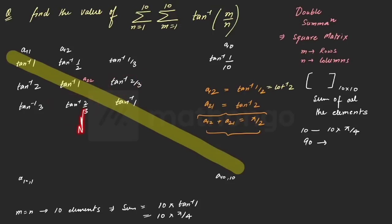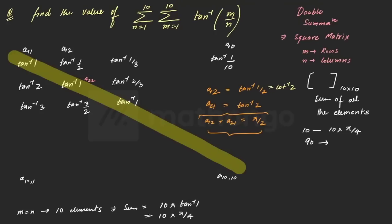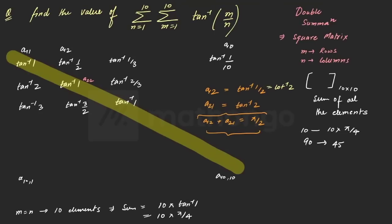Sorry guys, this should be, my bad, this should be what? 3/2. So if you know the pairing, you can in fact identify your wrong answers as well. Now you know, of those 90 elements, how many pairs are there? 45 pairs are there, whose answers are going to come out to be π/2.